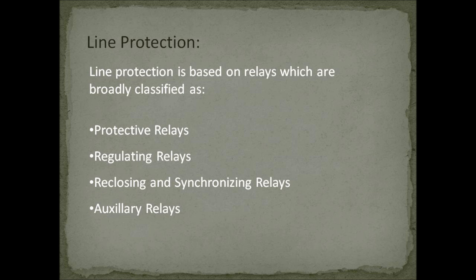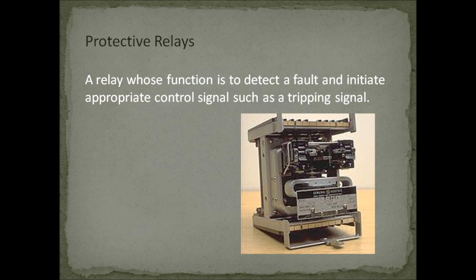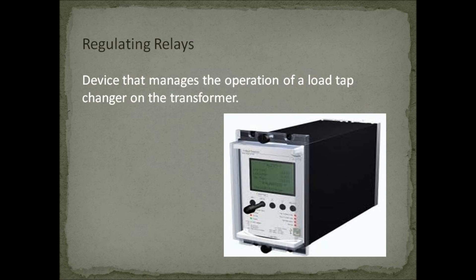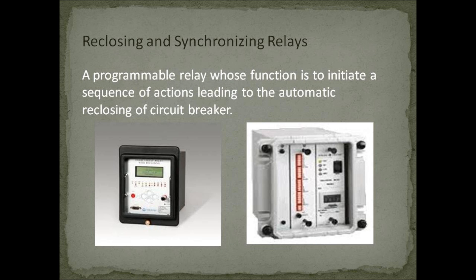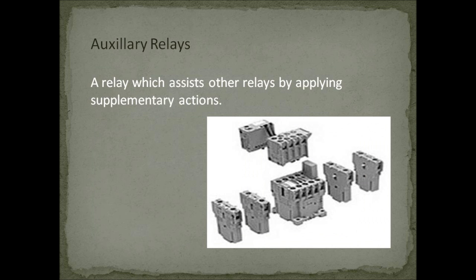Transmission lines are a vital part of the electrical distribution system as they provide the path to transfer power between generation and load. Transmission protection systems are designed to identify the location of faults and isolate only the faulted section. Line protection is based on relays, broadly classified as: protective relays — which detect faults and initiate tripping signals; regulating relays — which manage load tap changers on transformers; reclosing and synchronizing relays — which initiate automatic reclosing of a circuit breaker; and auxiliary relays — which assist other relays by applying supplementary actions.